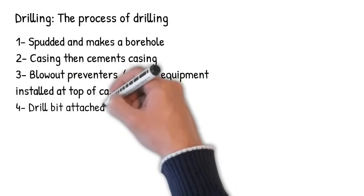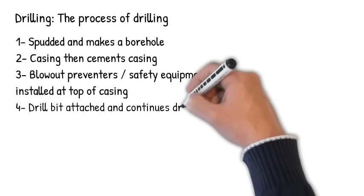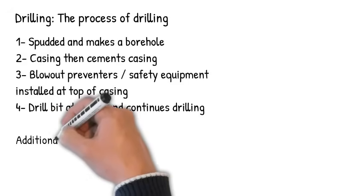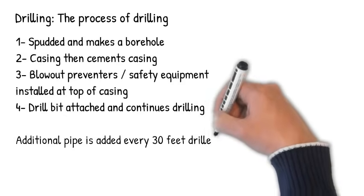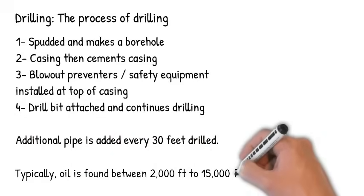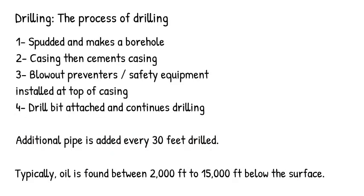After that, blowout preventers and safety equipment installed at the top of the casing. The blowout preventers are utilized to prevent any uncontrollable flow of oil, gas, or drilling fluid. Then the drill bit is attached and drilling proceeds. As the drill bit cuts the borehole about 30 feet deeper, additional pipe is added to the pipe already in the ground.